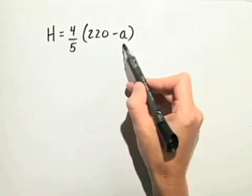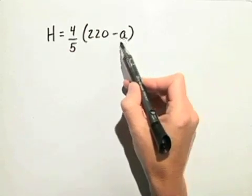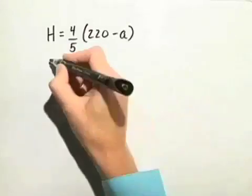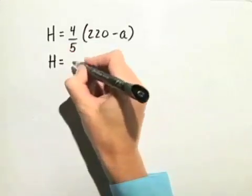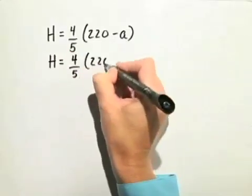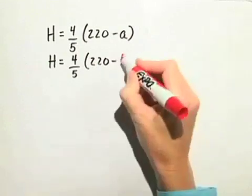In our case, we're looking at a 40-year-old person, so we'll substitute 40 in for A and evaluate this to see what the heart rate is in beats per minute. So, H is equal to four-fifths times the quantity 220 minus 40 for A.